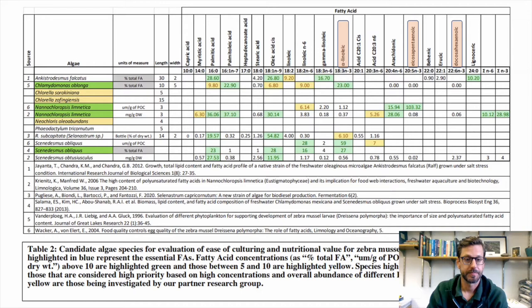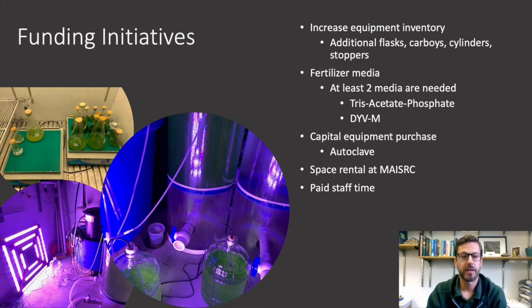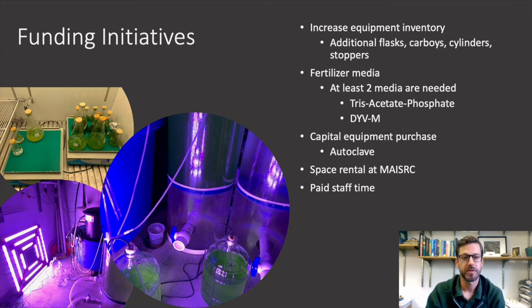The three algae highlighted in green have been selected as initial candidates for expanded culture. To date, I have cultured Chlamydomonas and Nanochloropsis algae species in smaller-scale systems to feed resident zebra mussels used for breeding experiments. This project will allow expansion to higher volumes of algae to support a higher number of mussels and diversify nutrition. A new autoclave will reduce staff time in sterilizing equipment and increase culture vessel sizes able to be used.